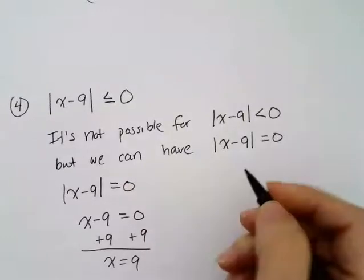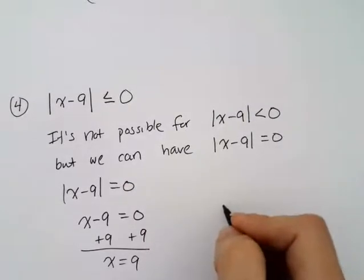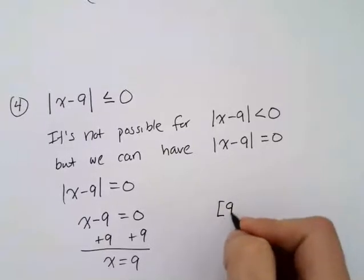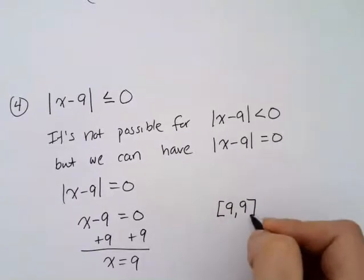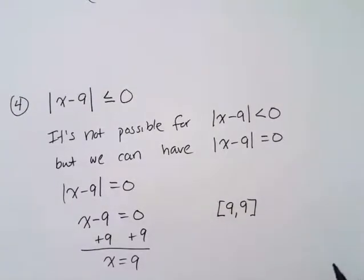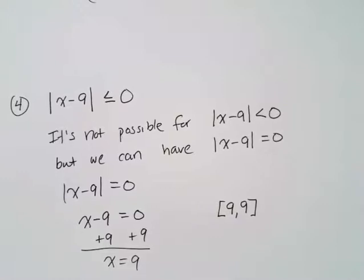We could write that as an interval with just one number: bracket, 9 comma 9, bracket. So again, these examples reinforce the fact that you should always be thinking about what a statement is telling you, and not just blindly going through the motions of step 1, step 2 — because sometimes you could go through those steps, get solutions, and not realize those solutions don't make any sense.